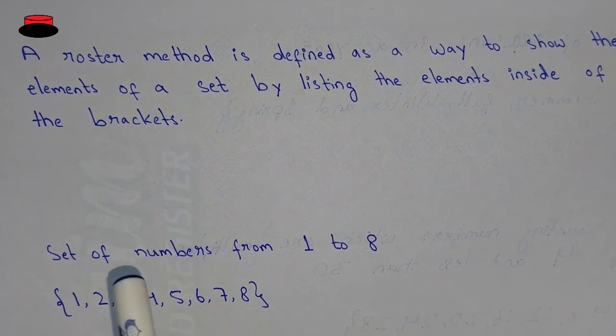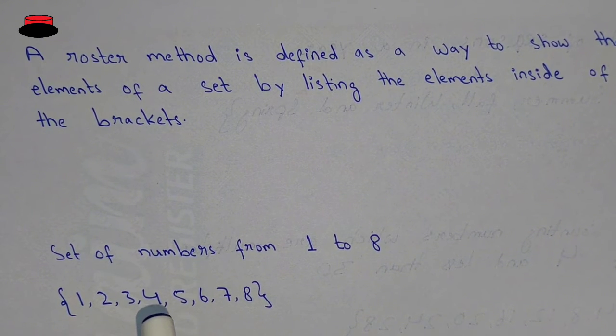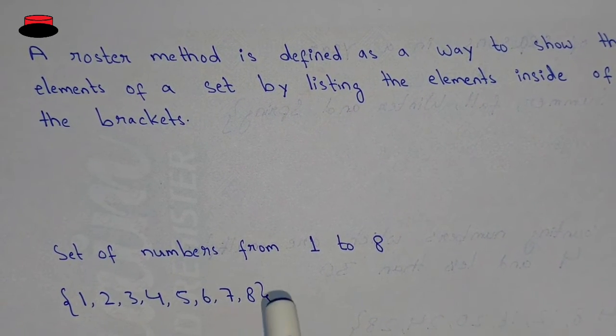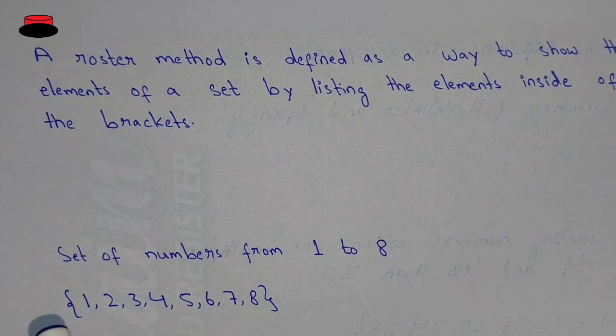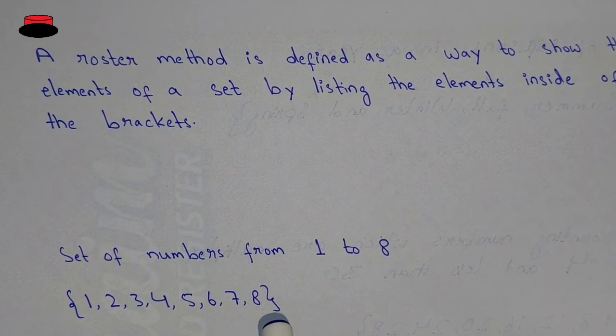So for example, here we have the set of numbers from 1 to 8: 1, 2, 3, 4, 5, 6, 7, 8. And we are writing these numbers inside the brackets, two curly brackets. It means we are writing this in roster form.